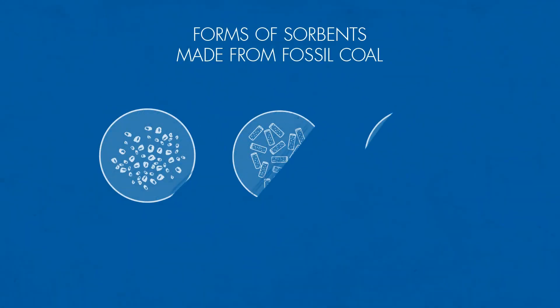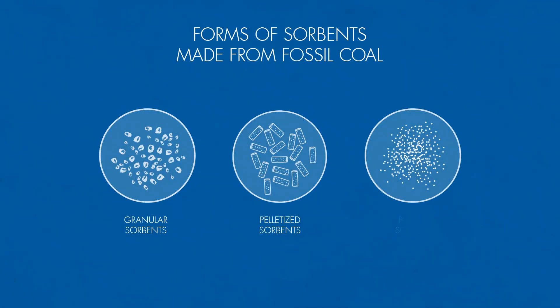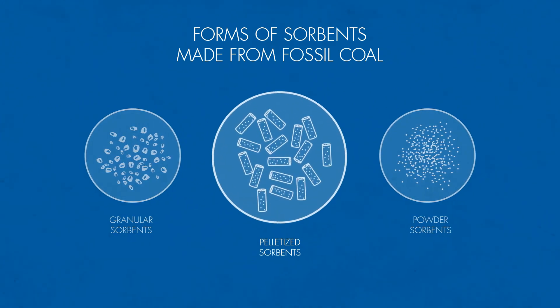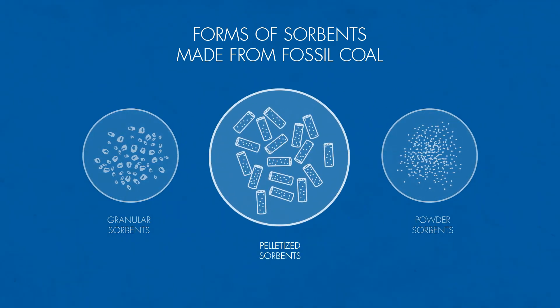Coal sorbents. The most popular form of sorbents made from fossil coal is pelletized, made in the form of cylindrical granules.